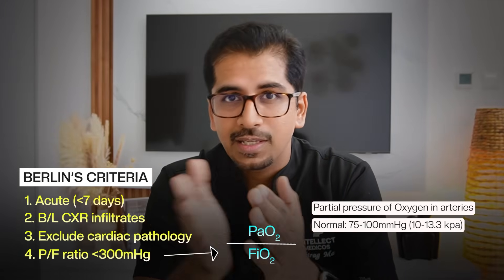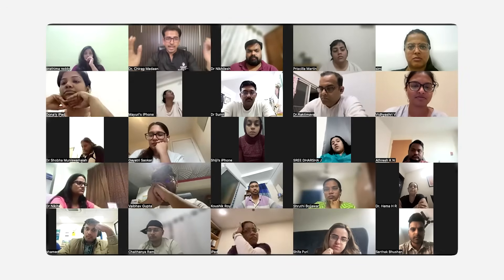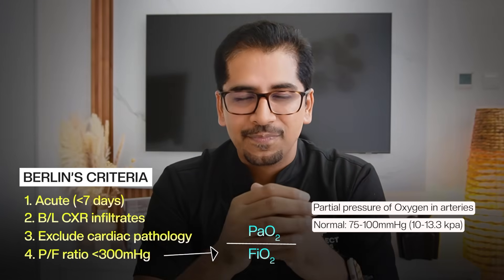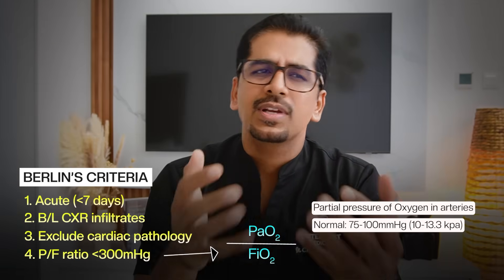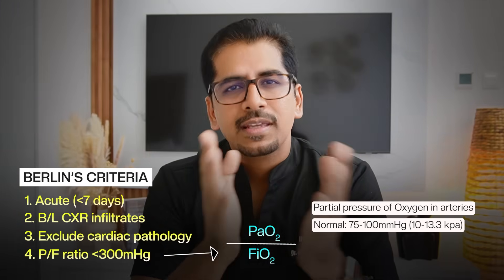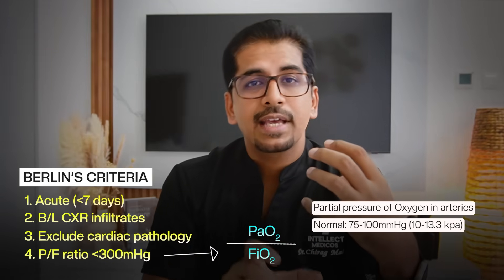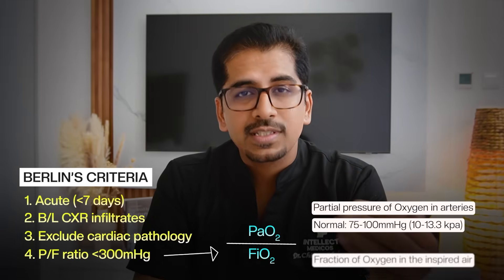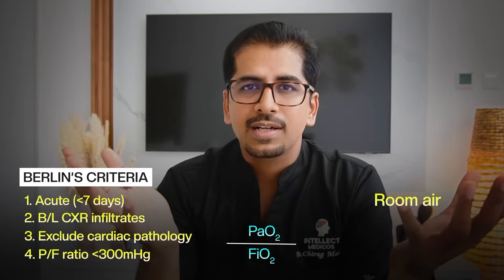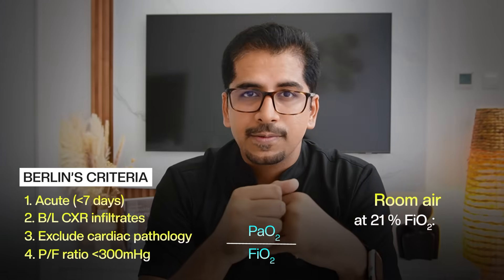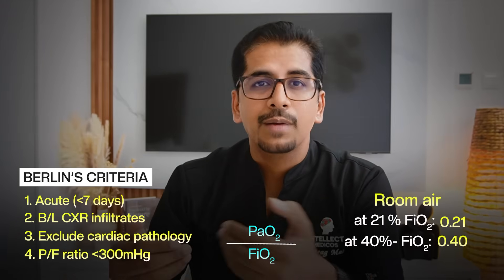For those working in the UK or preparing for exams like PLAB or MRCP, you need to know the values in kPa. The normal value of PaO2 would be 10.7 to 13.3 kPa, or you can say 10 to 13.3 kilopascals. In the denominator is FiO2 — the fraction of oxygen in the inspired air. If the patient is breathing room air, the oxygen is 21%, so the FiO2 fraction becomes 0.21. If you are giving 40% oxygen to the patient, FiO2 becomes 0.40.